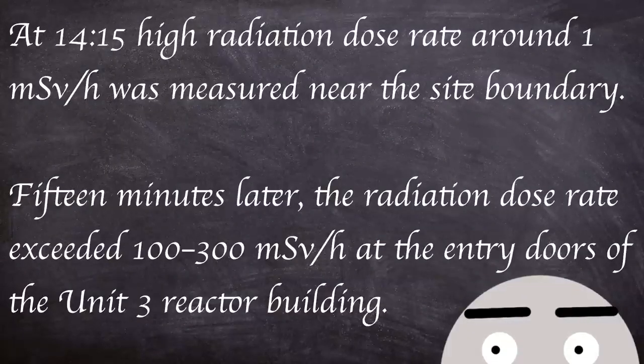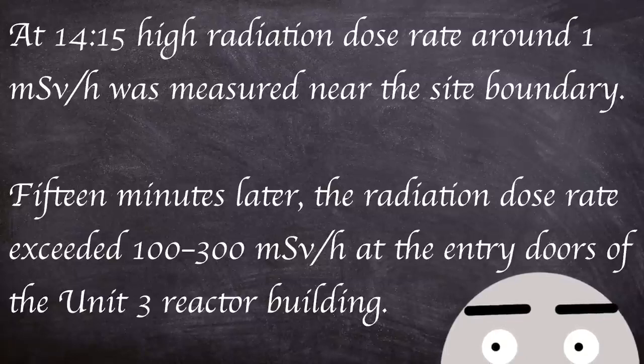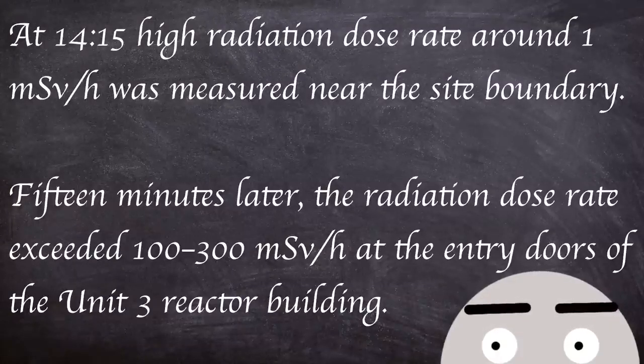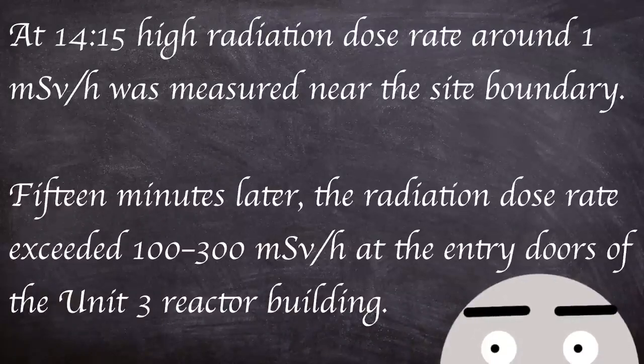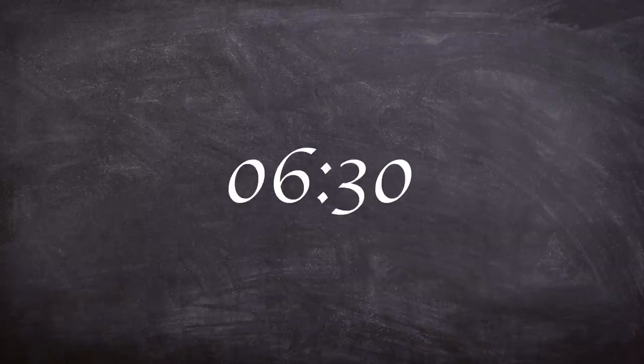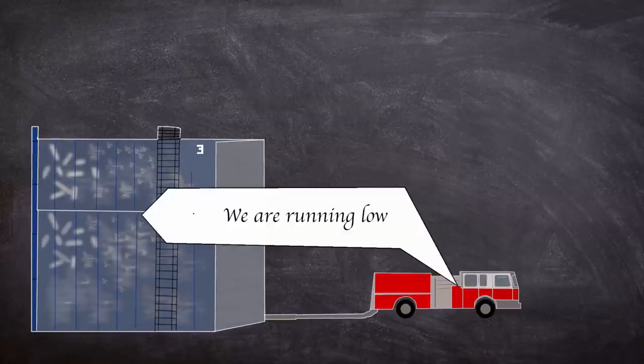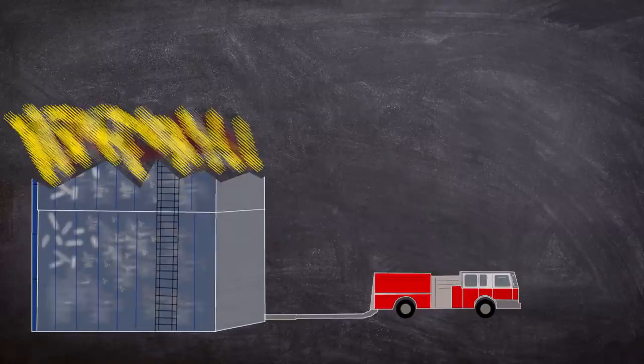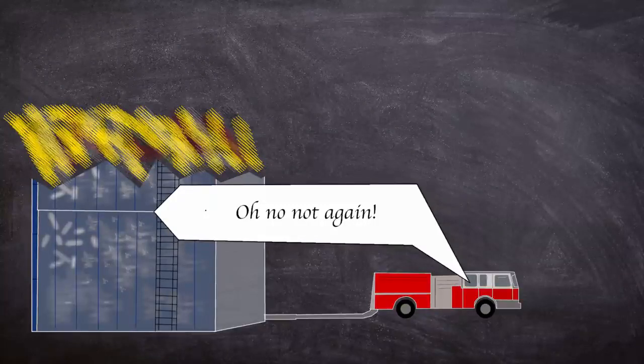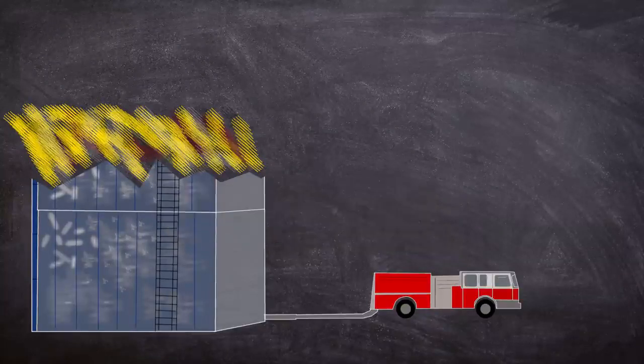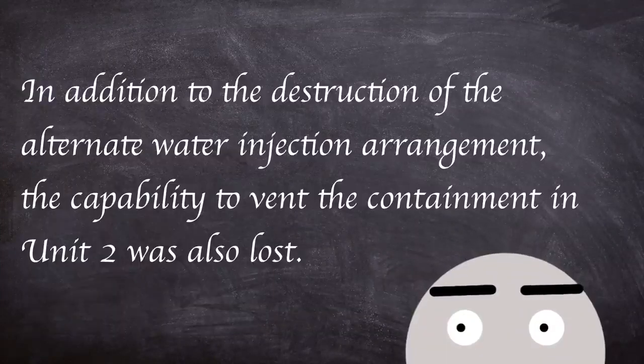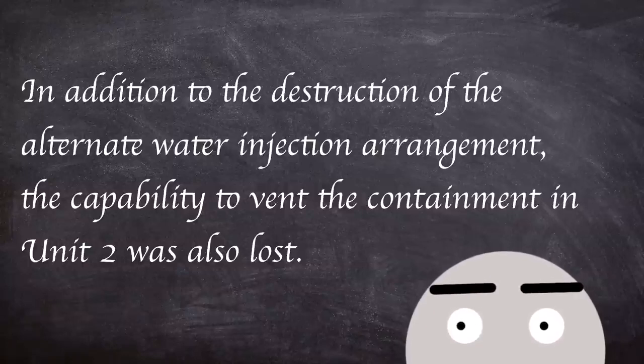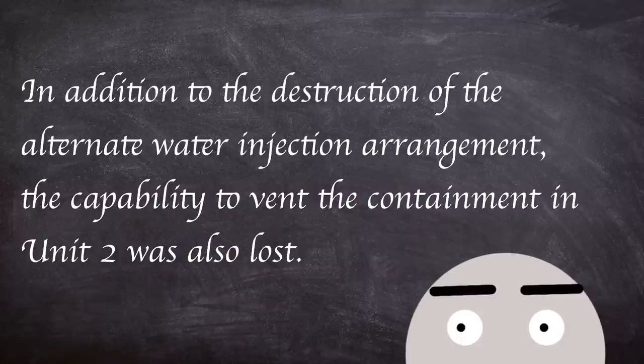At 2:15pm, high radiation dose rate of around 1 millisievert an hour was measured near the site boundary. 15 minutes later, the radiation dose rate exceeded 100 to 300 millisieverts an hour at the entry doors of the unit 3 reactor building. At 6:30am on the 14th, the water level in unit 3 dropped as cooling water supplies that were being pumped began to dwindle. At 11:01am an explosion occurred in the upper part of the unit 3 reactor building, similar to what happened at unit 1, destroying the structure above the service floor. In addition to the destruction of the alternate water injection arrangement, the capability to vent the containment in unit 2 was lost.